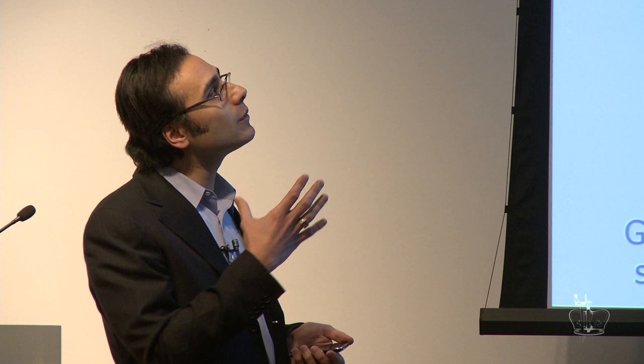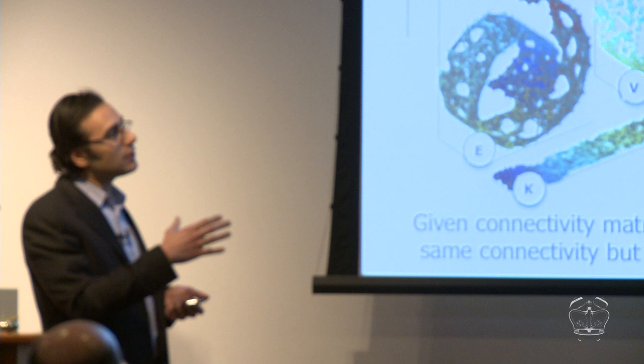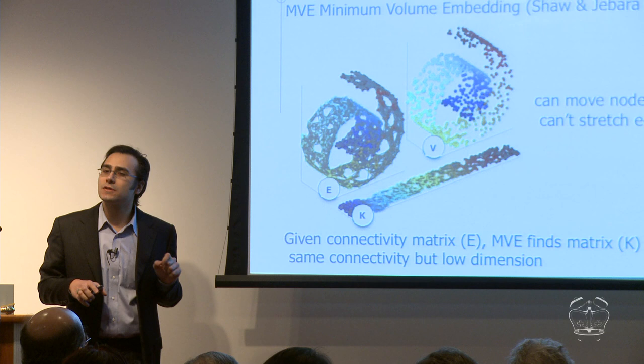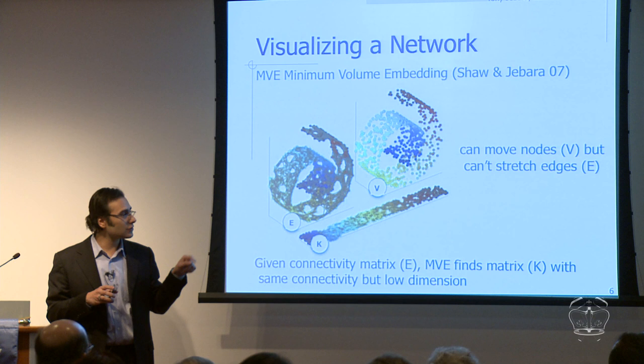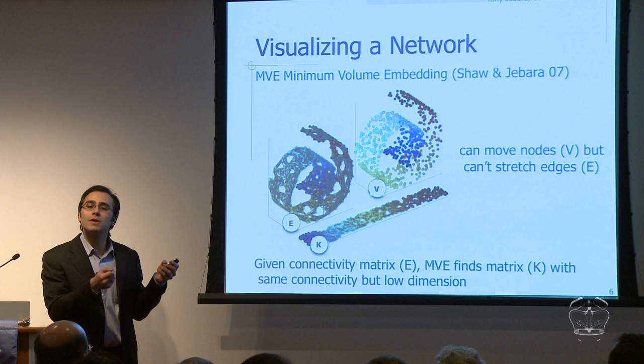One of the algorithms we're excited about is a technique for visualizing a network. There's a giant network out there — how do we make pretty pictures of it just to see it? We have an algorithm called the minimum volume embedding algorithm. 'Embedding' is just a fancy word for visualization. In 2007, Blake Shaw and I showed how you can take a network, keep the edges the same length but move around the nodes, and visualize it in 2D — or maybe 3D maximum.